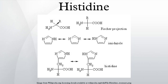Histidine is also important in hemoglobin. In helices, the E and F histidine residues assist in stabilizing oxyhemoglobin and destabilizing CO-bound hemoglobin. As a result, carbon monoxide binding is only 200 times stronger in hemoglobin, compared to 20,000 times stronger in free heme.